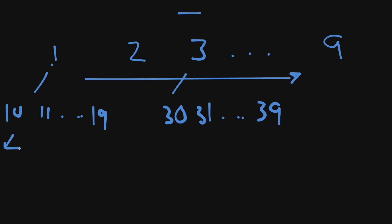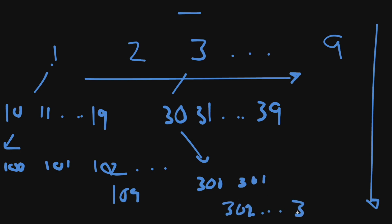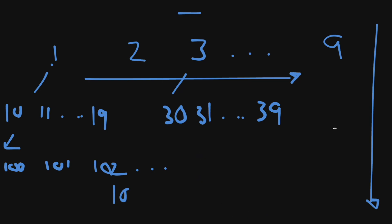We can go infinitely deep as n gets larger. So under 10 we'd get 100, 101, 102, up to 109. Under 30 we'd get 300, 301, 302, up to 309. The key insight is thinking about how many items are at each level of this tree.